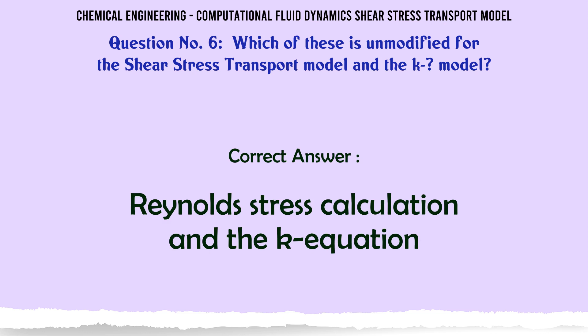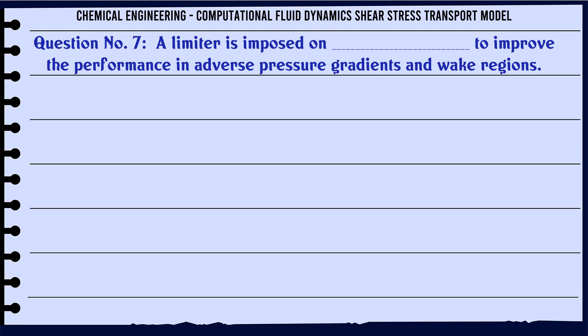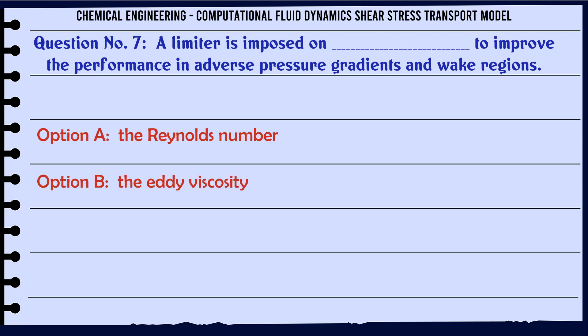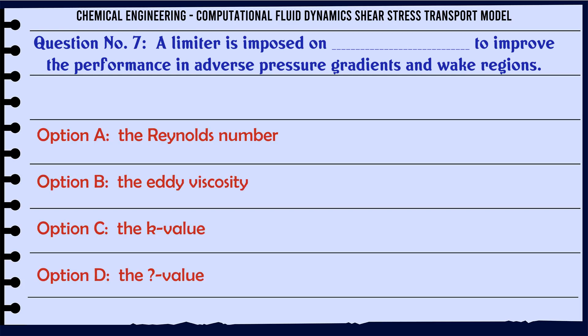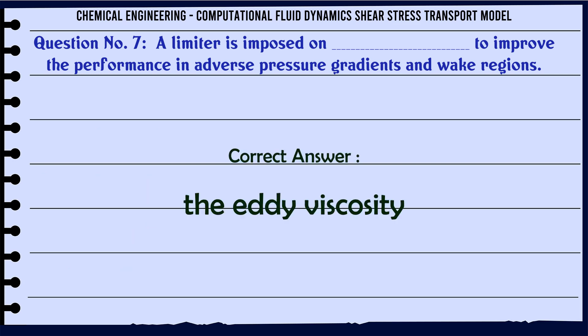A limiter is imposed on to improve the performance in adverse pressure gradients and wake regions. A) The Reynolds number — B) The eddy viscosity — C) The K value — D) The ω value. The correct answer is: eddy viscosity.